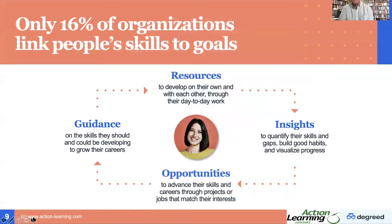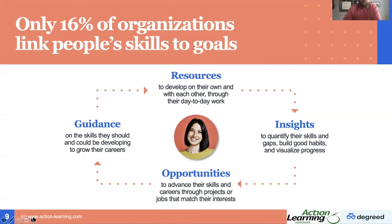Only 16% of organizations link people's skills to goals — this is the Brandon Hall group study. Research shows that most workers lack the key things needed to navigate rapid change. Things that are really important and should be thought about: guidance on the skills they should be developing to grow their careers, the resources to develop on their own and with each other through day-to-day work — we call this learning in the flow of work. Insights to quantify their skills and gaps, build good habits, and visualize progress. Then opportunities to advance skills and careers through projects or jobs that match specific interests.